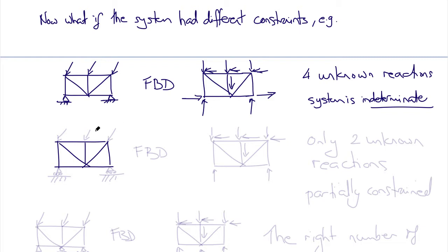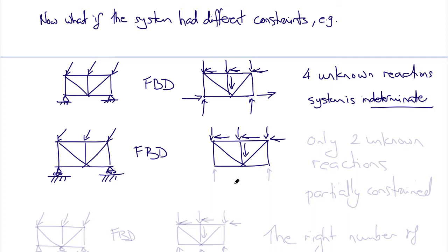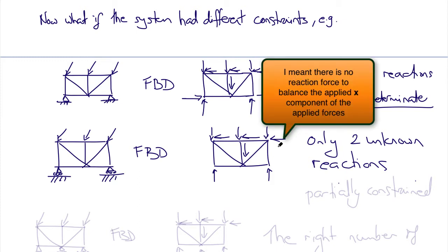In another case with the same applied loads, suppose both supports are on rollers. Now the free body diagram has the same applied load and weight components, but only two reaction forces instead of three. We have more conditions to meet than unknowns to meet them, so the system is only partially constrained and cannot necessarily be in static equilibrium, because there's no reaction force to balance the applied y components of force on the structure.